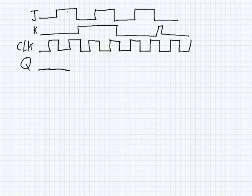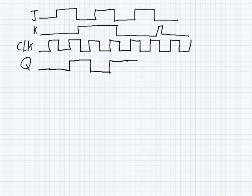At the next rising edge, J is 1 and K is 0, so we're going to set. Next rising edge: J is 0 and K is 1, so we reset. Next rising edge: J is 1 and K is 1, so we toggle. Next rising edge: they're both 0, so we latch. Next rising edge: J is 1 and K is 0, so we set — but we're already set, so no change. The next two rising edges both have J and K at 0, so we latch — no change.